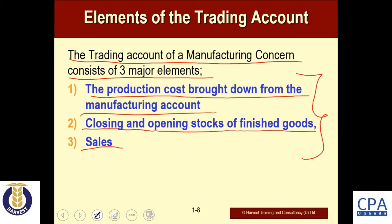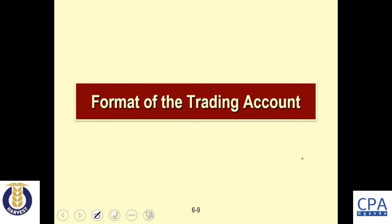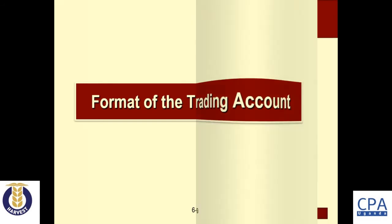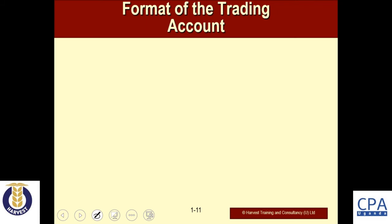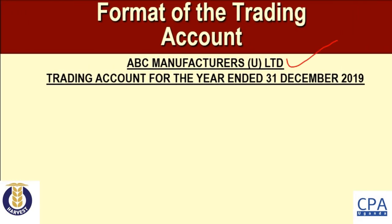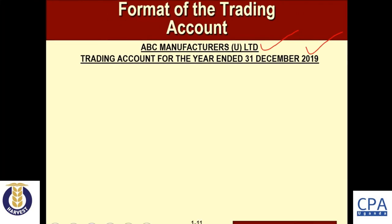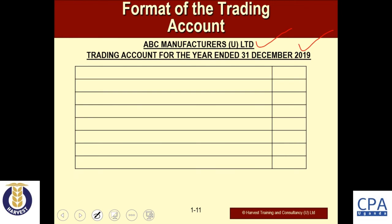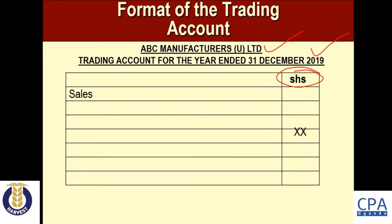Now we look at how the format of the trading account is structured. Like all accounts, our trading account will have an appropriate title — for example, 'FBC Manufacturers Limited, Trading Account for the year ended 31st December 2019.' You will make use of rules and columns, and you need to indicate the currency — dollars, pounds, shillings, etc. You then proceed to recognize the sales in the trading account.